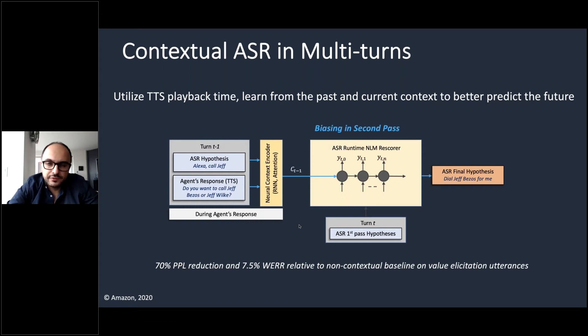So, the TTS response will be, do you want to call Jeff Bezos or Jeff Wilkie? And now, at this point, it's apparent that we already know that we are just giving the customer two options. So, it is a really good idea to bias the language model for processing the next coming query from the user to make sure that we are very robust in recognizing Jeff Bezos and Jeff Wilkie because we already have that information.